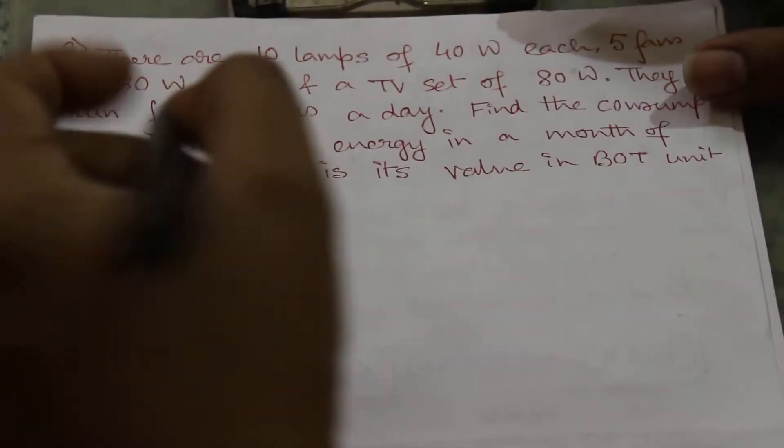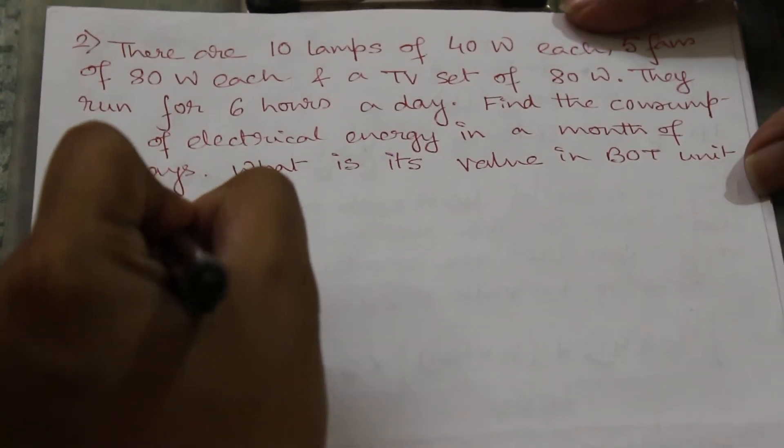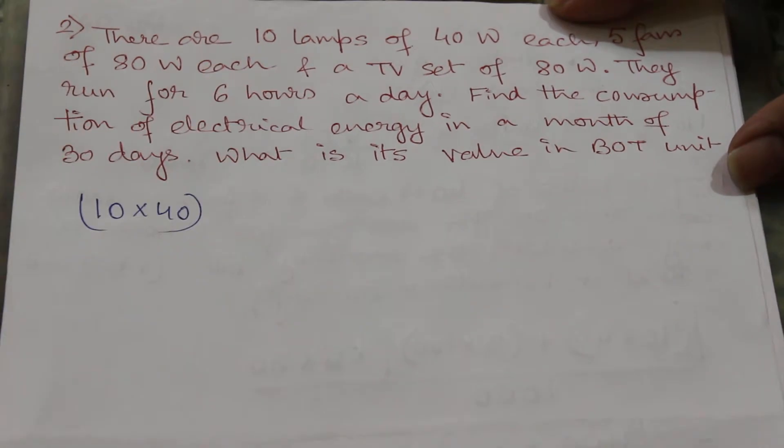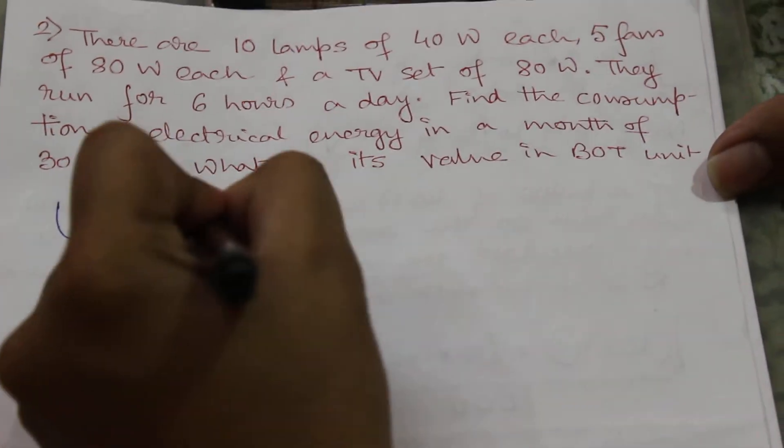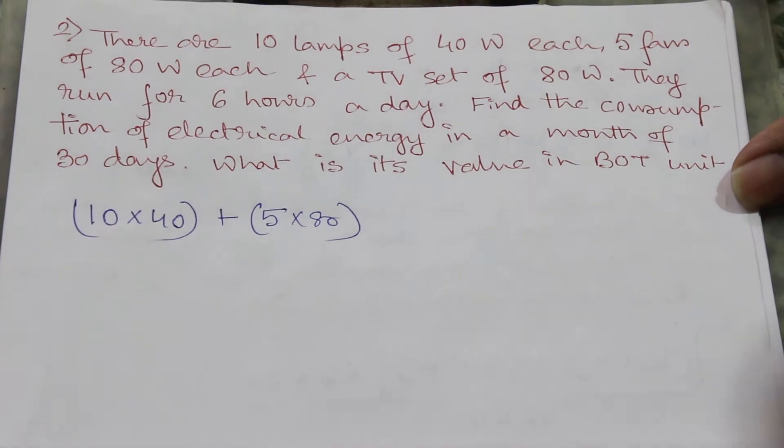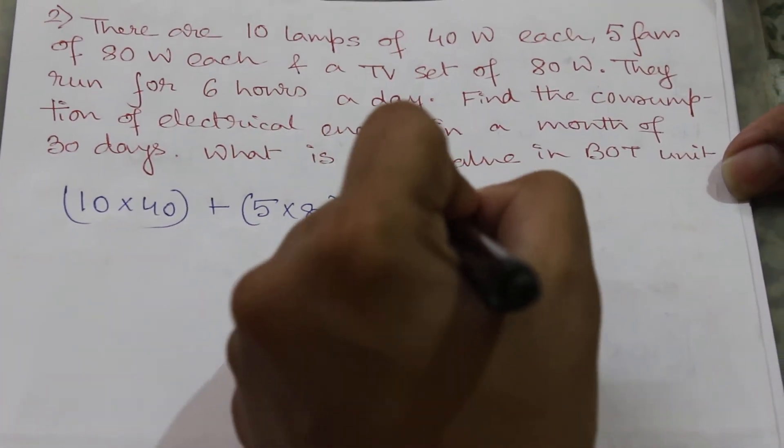So in the last example we will put 10 lamps of 40 watt each, we will multiply these two. 5 fans of 80 watt each, these two. And TV set 1 into 80.